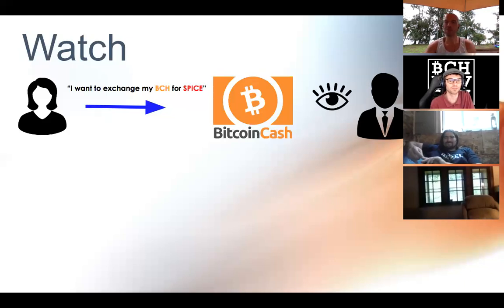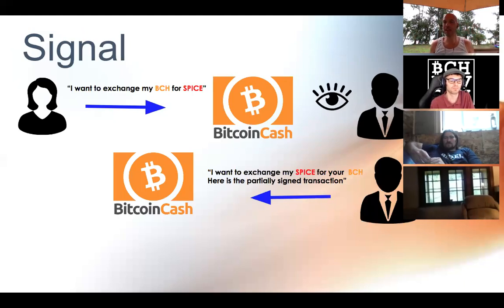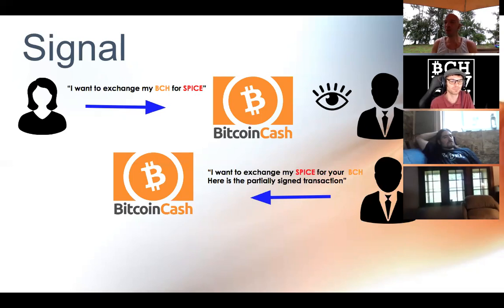It becomes like a bazaar where you can walk in and see everybody selling their wares at competing prices. Bob, who has SPICE, sends another signal directed back at Alice saying: 'I want to exchange my SPICE for your BCH, and I've already created the whole transaction — it's just missing your signature.' He's signed it. It's a valid transaction. He broadcasts it back to the Bitcoin Cash network.